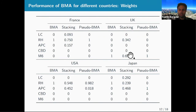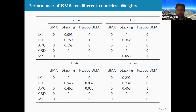Overall, stacking tends to select two or three models, while BMA and pseudo-BMA select only one. BMA tends to select either RH or M6, which is consistent with the literature — selection based on AIC or BIC typically selects RH or M7. For stacking, rather than only choosing Renshaw-Haberman, it proposes to mix Renshaw-Haberman with Lee-Carter and APC, for example for France.